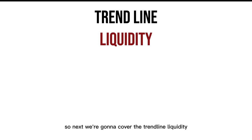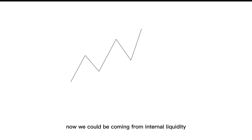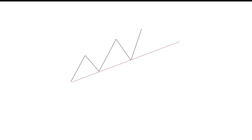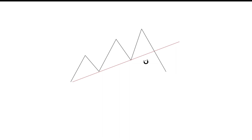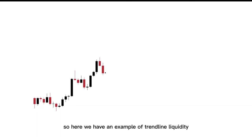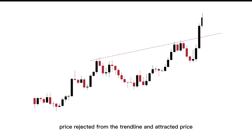Next, we're going to cover trendline liquidity. If you look here, you don't see equal lows. You can't pinpoint where the resistance is coming from. It could be coming from internal liquidity, but a lot of times retail traders use what you call a trendline. Liquidity is resting underneath the trendline, so now that trendline becomes a magnet to attract price. Here we have an example of trendline liquidity — price rejected from the trendline and attracted price.